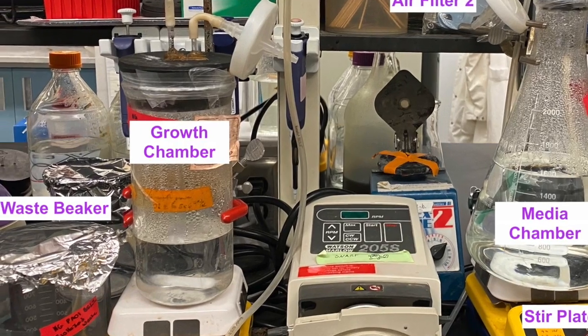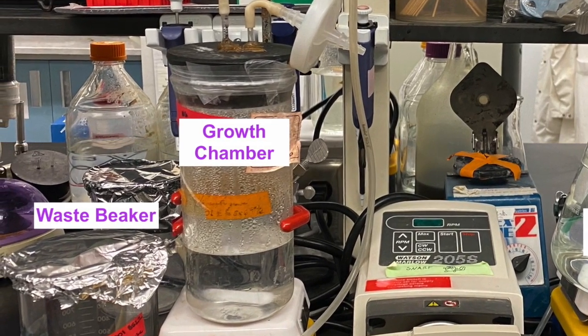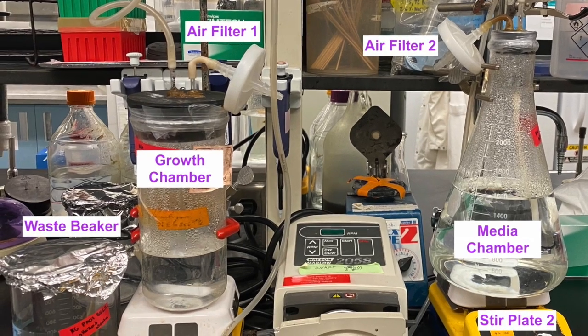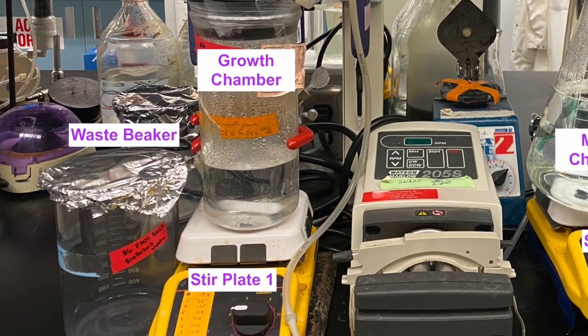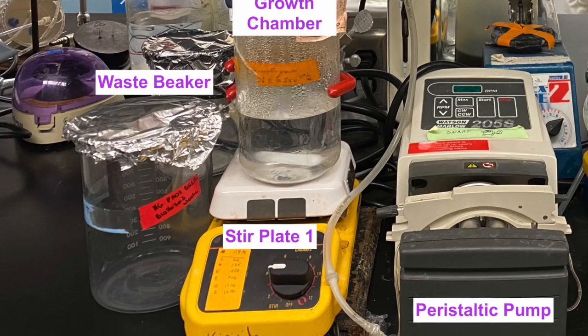This specific chemostat is culturing Pseudomonas aeruginosa. The growth chamber is connected to the waste beaker, where nutrients and end of life products are exiting the chemostat constantly.